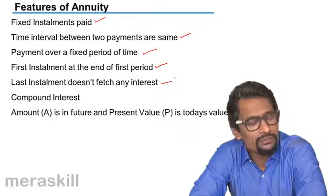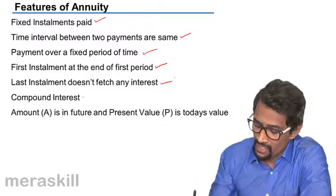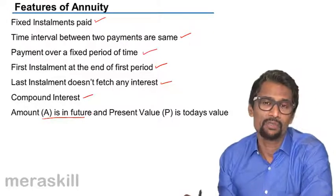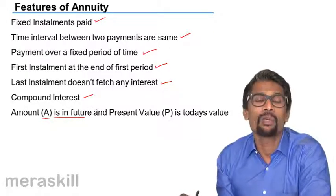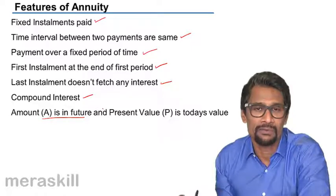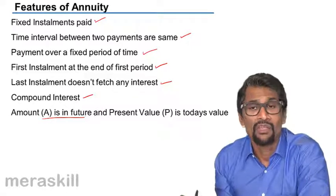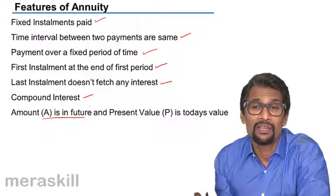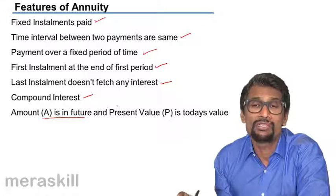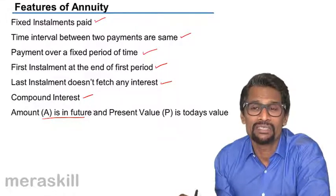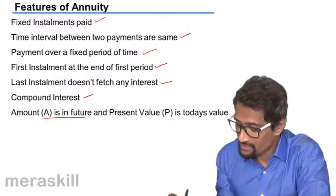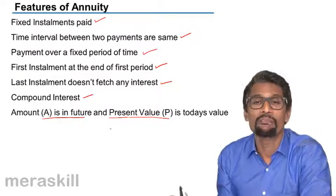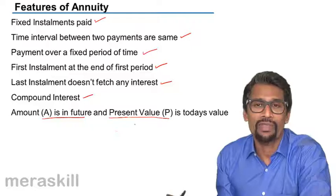The basic symbol used is the amount, which is the future value. Suppose you're depositing 10,000 — what will be the value of it five years from now? That is a future value. Suppose you're depositing 10,000 for five years — what is the equivalent of all those deposits currently? That is called the present value. So these are the features of annuity.